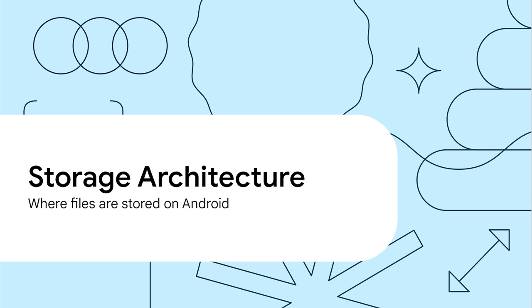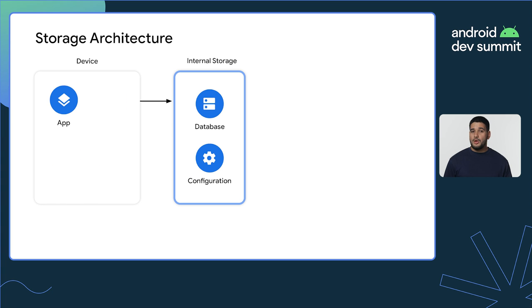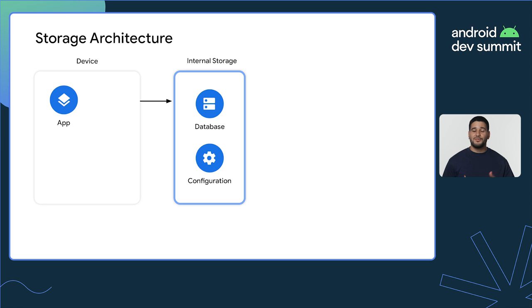Let's first have a look at how storage is architected on Android. A device has a primary storage volume stored on flash memory or on a hard drive where the OS and apps are located. When Android installs an app, it creates a directory for the app's internal storage on the same primary storage volume. It's private and accessible only to that app, so it's the right place to store anything confidential like databases and configuration files.